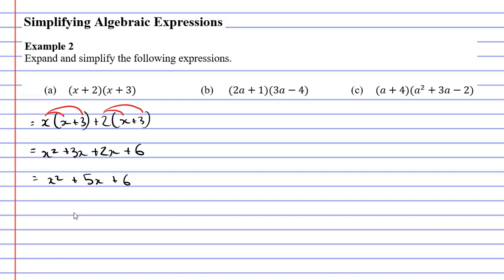That's now in its simplest form. There's also another method called the FOIL method — F-O-I-L. The FOIL method is great but it doesn't always work; it's not going to work with question C.